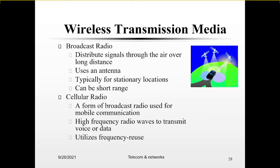Broadcast radio distributes signals through the air over a distance and uses antennas that are connected to the systems. Broadcast works under short-range frequencies or short distances, and they are for stationary locations — for example, used in homes, but not when we are on the move. Broadcast radio examples would be radio sets and radio systems that we use for listening to voice broadcasts at home.